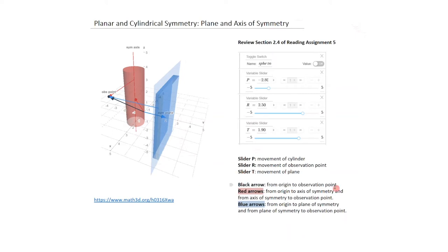The black arrows go from the origin to the observation point, the red arrow goes from the origin to the axis of symmetry and from the axis of symmetry to the observation point. In cylindrical coordinates, we're dealing with the distance between the Z-axis and the axis of symmetry. In the case of the symmetry plane, it's with respect to the origin, perpendicular to the plane of symmetry. You can toggle between spherical objects used in divergence theorem problems; in source-free problems, spheres don't come up.